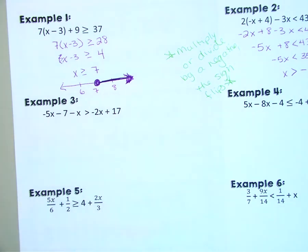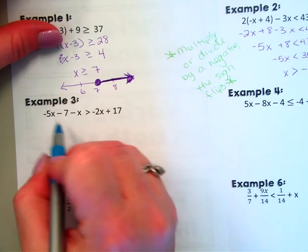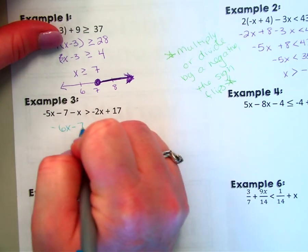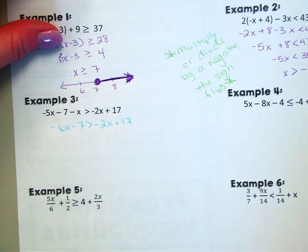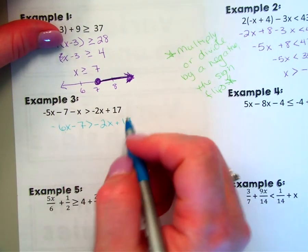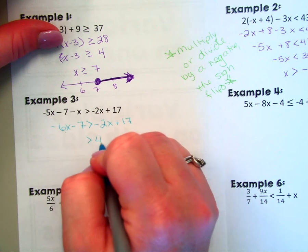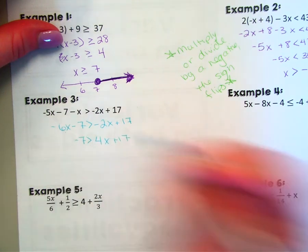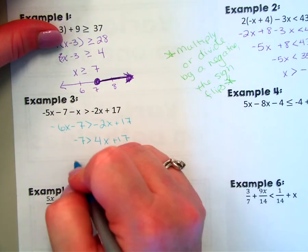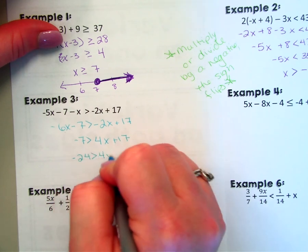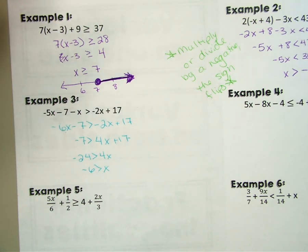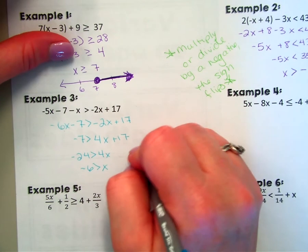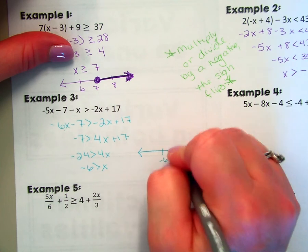Example number three: got two variables on either side. I'm going to first find these ones on the left, and then I'm going to add my smaller one over, and then I'm going to subtract my 17 over, and then divide by 4. Even though my answer is negative, I did not divide by a negative, so my sign is not going to flip. So I got negative 6.